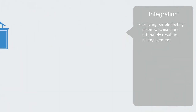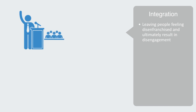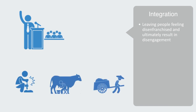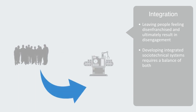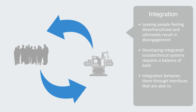Inversely, when we give precedence to the social domain, we can get a lack of technical efficiency, incapacity to automate basic processes, and lack of technological capabilities. Developing integrated sociotechnical systems requires a balance of both, and importantly the integration between them through interfaces that are able to translate the language of one domain into the other.